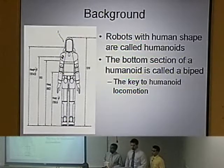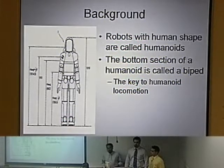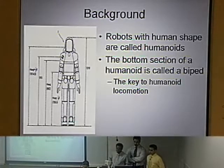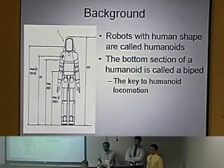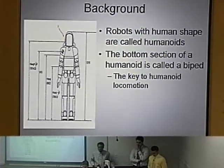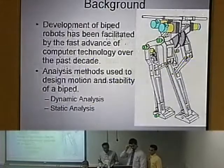Now, a background on biped motion. In robot design, when you build a robot that has a human shape such as limbs and arms, you have a humanoid. Our focus was on the bottom part of the humanoid, which is the biped. Like humans, it has two legs in order to achieve locomotion, which is key.